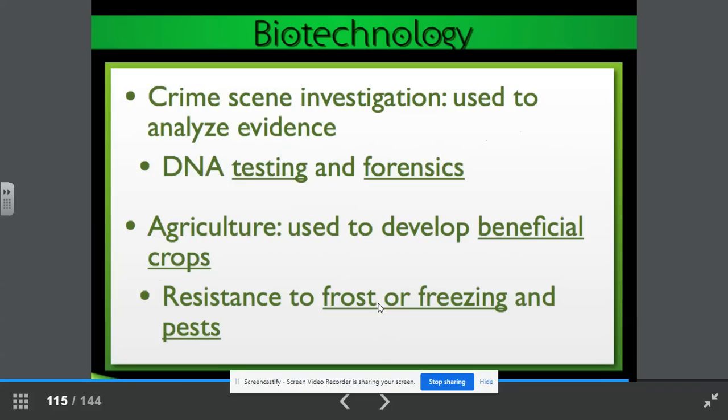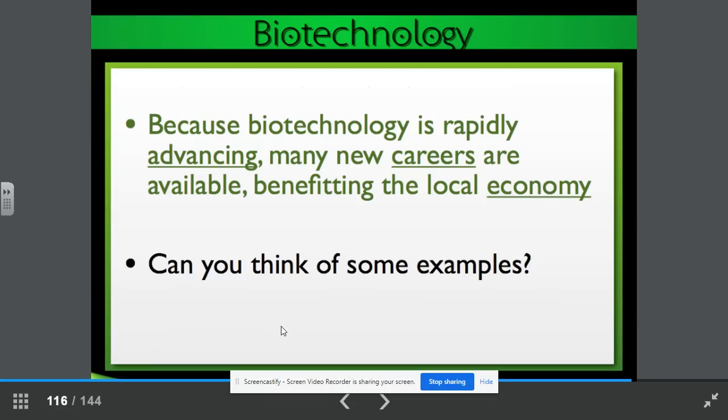Crime scene investigation. We talked about forensic science in biotechnology. That uses DNA for testing and study of a crime scene. It can exonerate or it can help to put criminals away. Agriculture is another area of biotechnology. It is used to develop beneficial crops. The resistance to frost or freezing and pests are important in agriculture. Because biotechnology is rapidly advancing, many new careers are available, benefiting the local economy. Can you think of some examples?